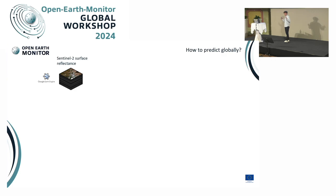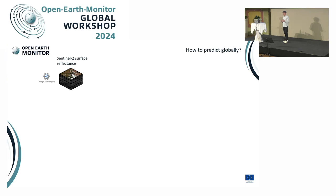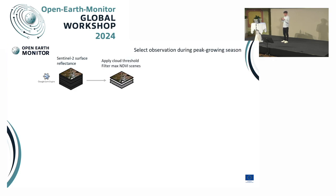Now we have trained this model and we need to apply it globally. We have a huge data catalog of Sentinel-2 reflectances in orders of petabytes, and we need to reduce this data. The first question is: which time of the year, which time in the vegetation cycle are we trying to describe? We want an annual product capturing the peak of the growing season. So on a Sentinel-2 tile level, for all tiles from the same location, we look at the highest NDVI value and select the best observations.